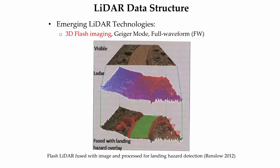While discrete return LiDAR is the current dominant industry-wide technology, emerging LiDAR technologies such as 3D Flash Imaging, Geiger Mode LiDAR, and Full Waveform are being developed and adopted by the industry as the technology matures. Both 3D Flash Imaging and Geiger Mode LiDAR use a sensor array to create a LiDAR point cloud one scene at a time instead of one pulse at a time. This technology is sometimes referred to as LADAR, or Laser Radar. In the graphic, one flash LiDAR scene is merged with an optical image and processed to provide landing zones for helicopters in real time. Currently, this technology is primarily used for military purposes, but will be adopted by the commercial sector in the near future.